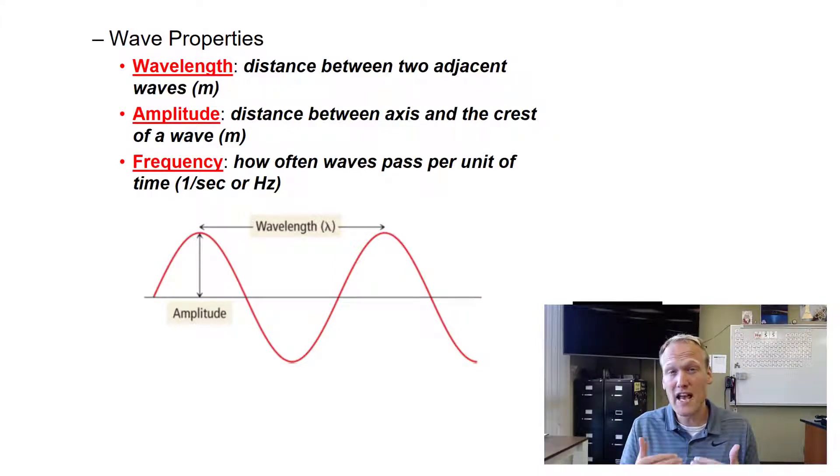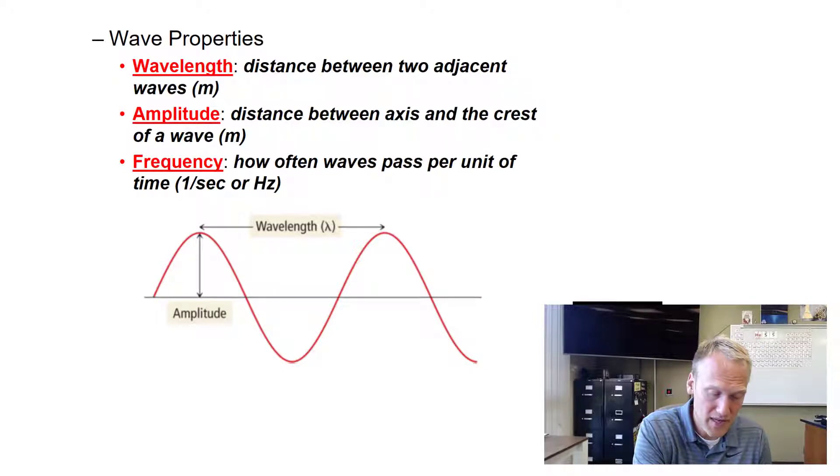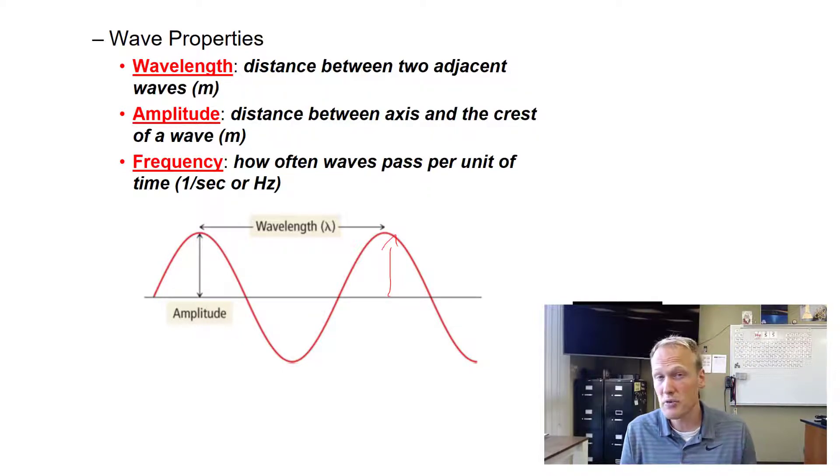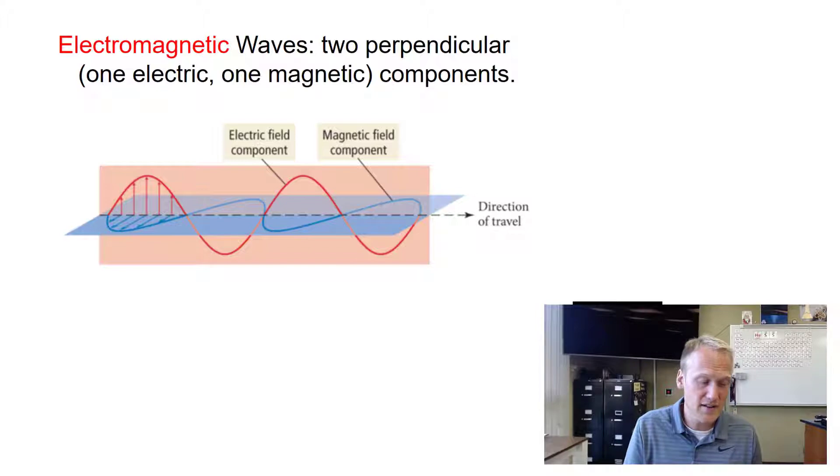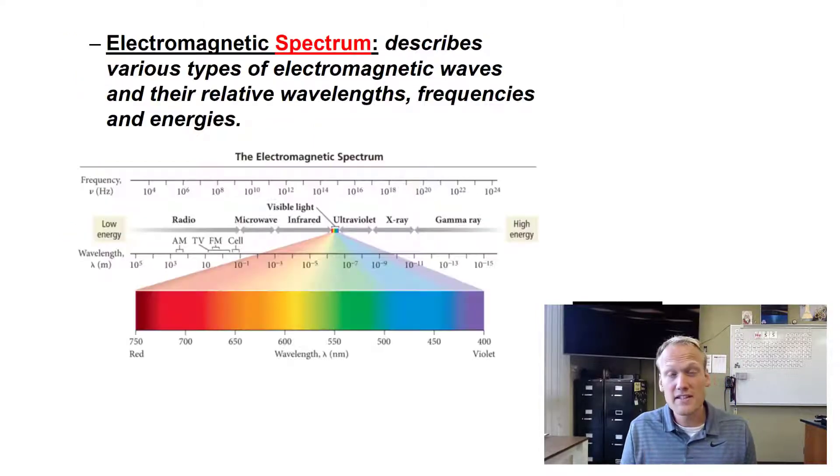Amplitude is how much energy the wave has, typically measured by how far the wave gets from the baseline. The more energy you put into the wave, the farther that wave will crest or trough from the midline. Electromagnetic waves are actually two perpendicular waves: one on the electric axis and one on the magnetic axis, hence electromagnetic. This is why we call it the electromagnetic spectrum.